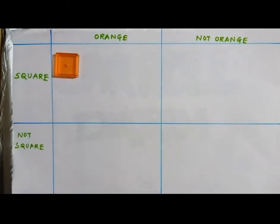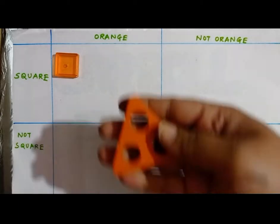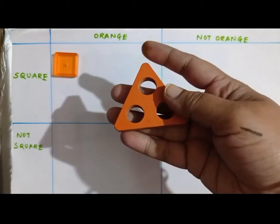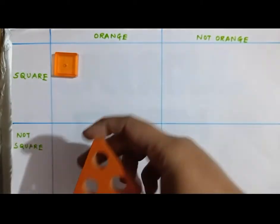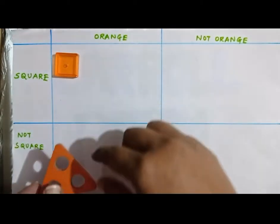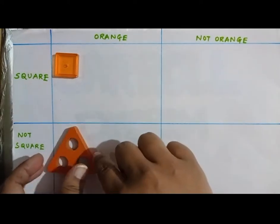Let us take another shape. I have this orange color triangle. So, it is not a square but it is orange, so I am going to place it here.